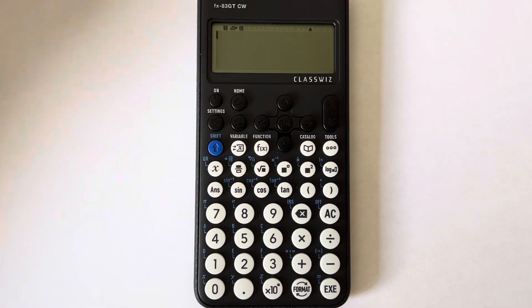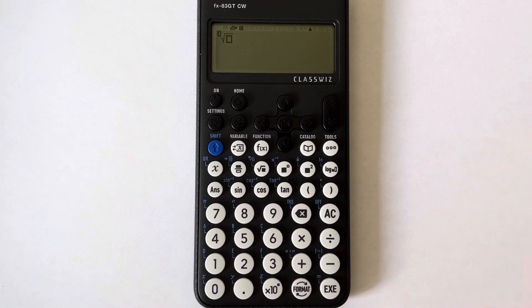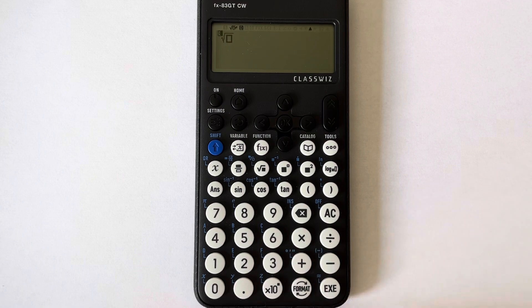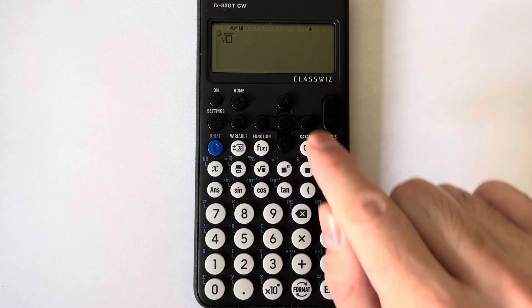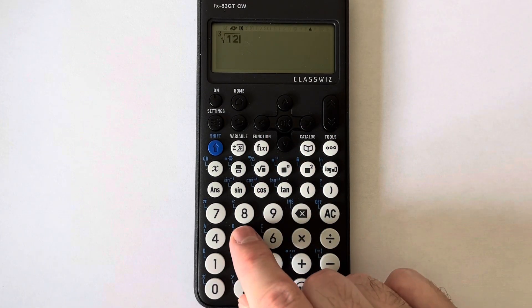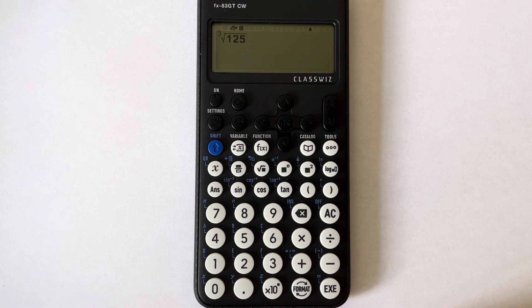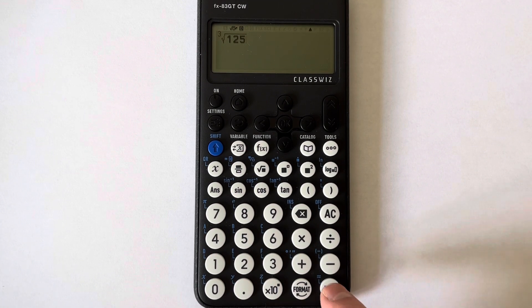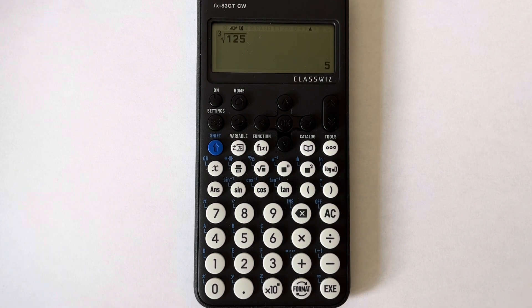Press shift, then the square root key. Type in a little three here, and then put 125 down underneath the root. That will give you an answer of five.